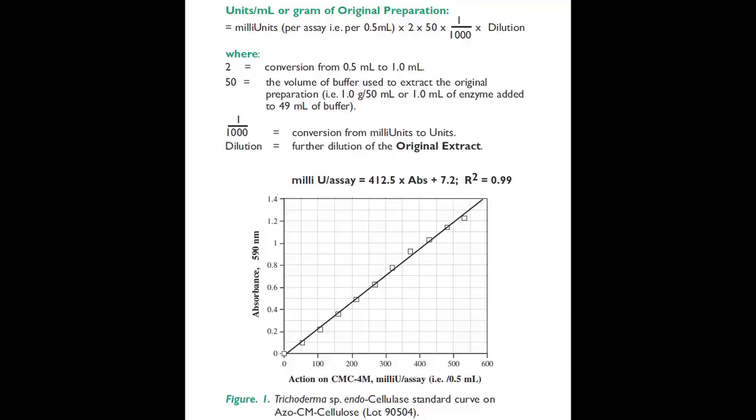Then this is multiplied by 2 to allow for the conversion of 0.5 ml used in the assay back to 1 ml, by 50 which is an extraction volume of 50 ml per 1 gram of sample or per 1 ml of the original enzyme preparation, 1 in 1000 is the conversion from milliunits to units, and dilution is the further dilution of the original extract.